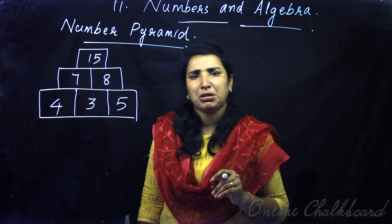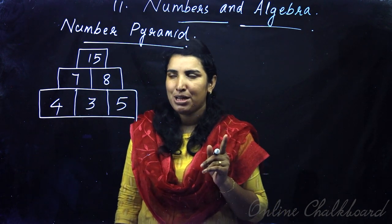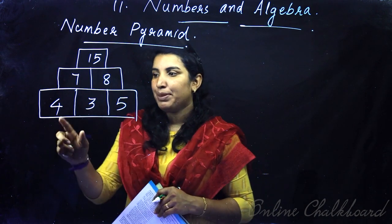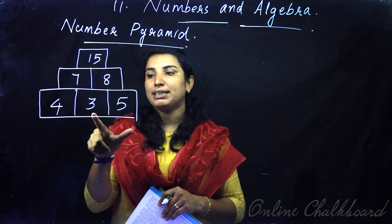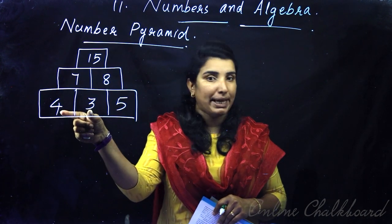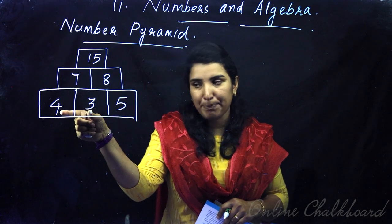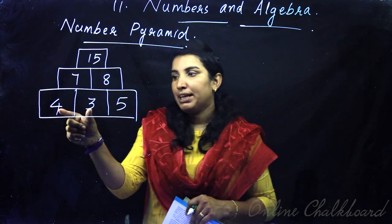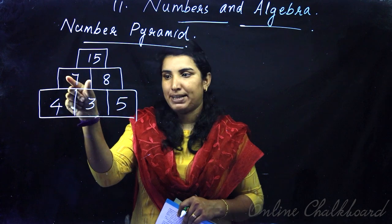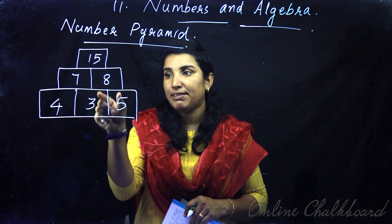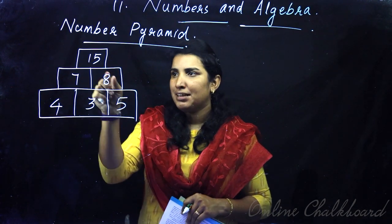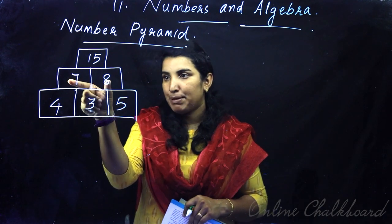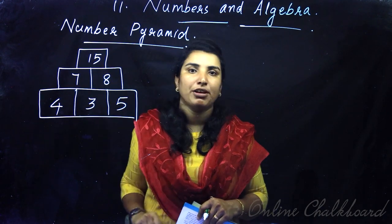The numbers are added to the middle row. If you have an idea, you have a, a, and a 5. The 4 and 5 are added to the top row. This 4 plus 3 is 7. 3 plus 5 is 8. Then, 7 plus 8 is 15.